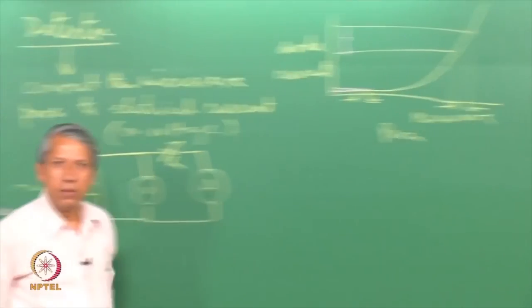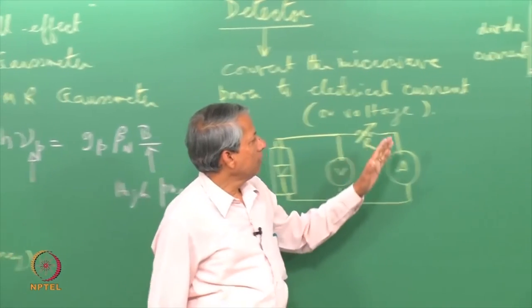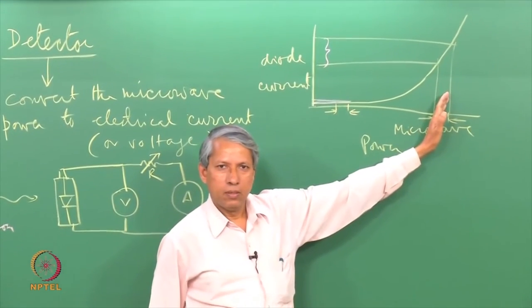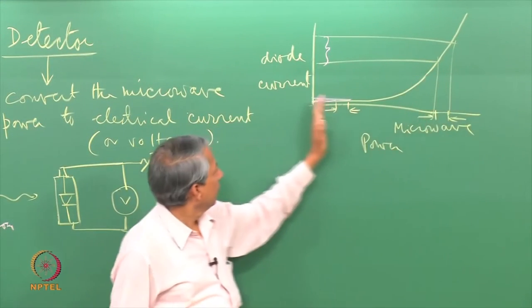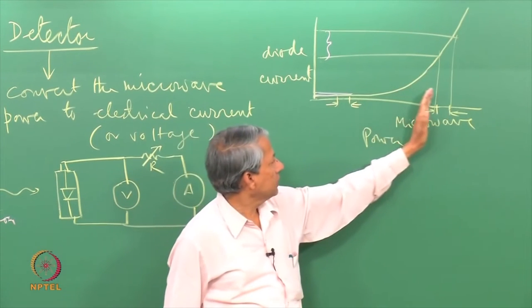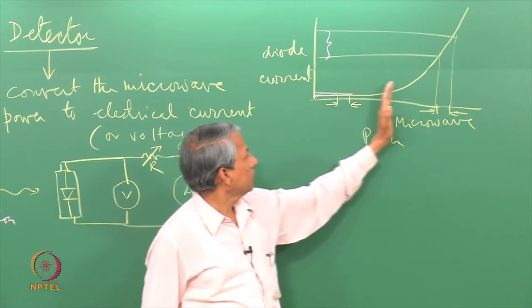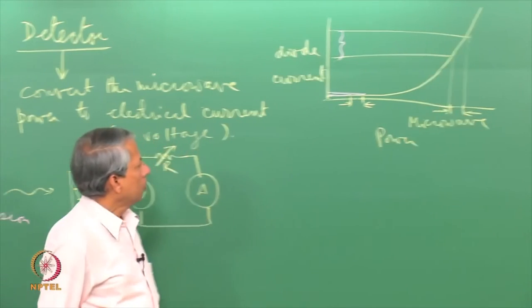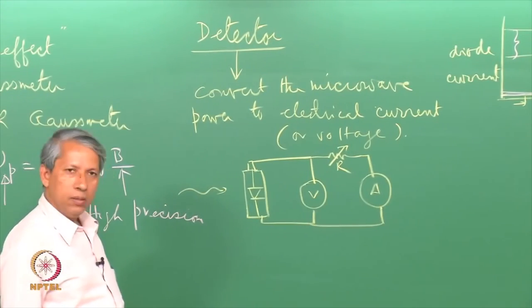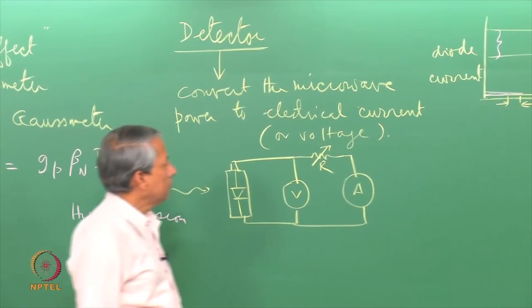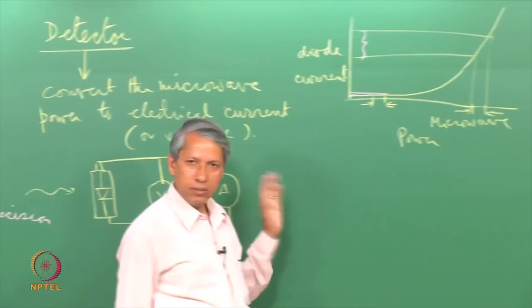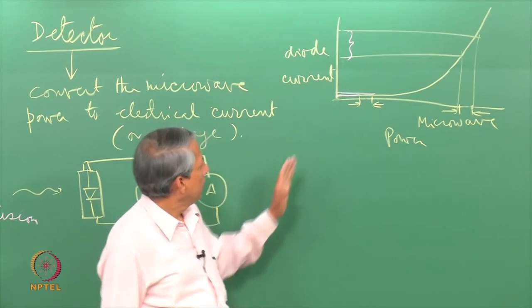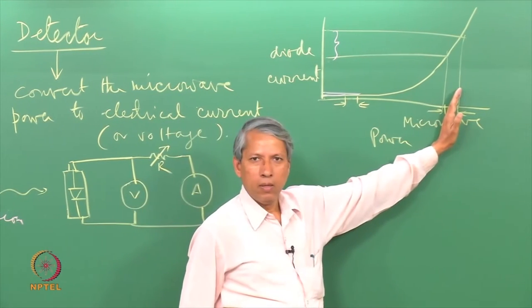If the diode is working here, it is insensitive. When it works here, it is much more sensitive. It is very important therefore to decide where we want to work. Obviously we want to work here. To do that I therefore have to adjust the operating position of the diode somewhere in this region.